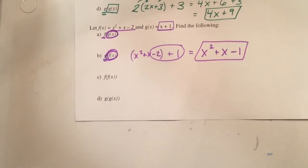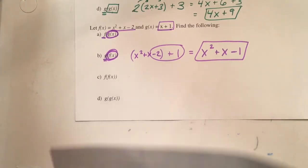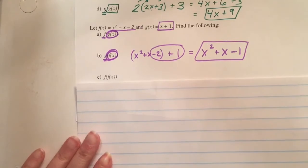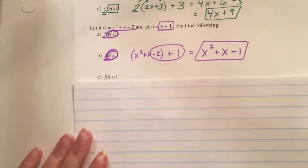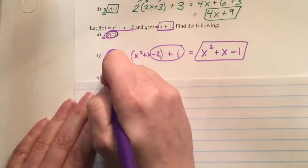One thing hopefully that you notice — sometimes these compositions are a little bit of work and they take some time. Other times they're so fast. Like b was really fast. Now c is going to be kind of a stinker.